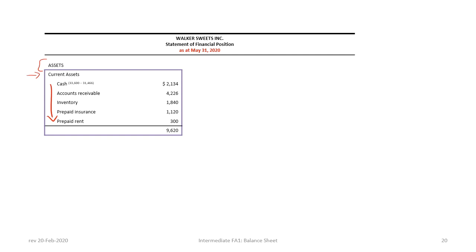We begin with cash of $2,134, calculated as cash collected minus cash disbursements from the original data. Additional current assets include accounts receivable of $4,226, inventory of $1,840, prepaid insurance of $1,120, and prepaid rent of $300. Total current assets are $9,620. Before proceeding, please ensure that you are able to reconcile these numbers.